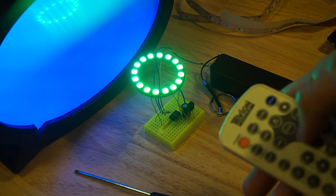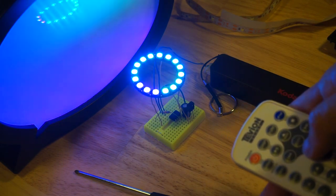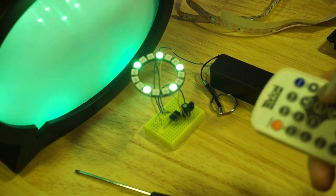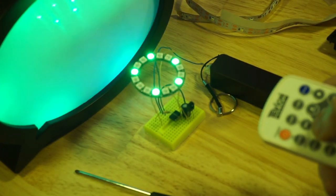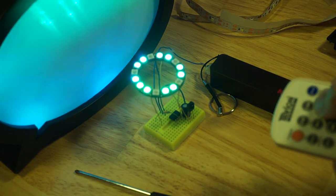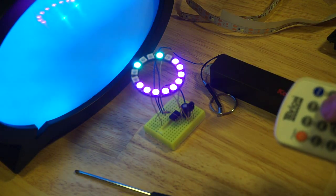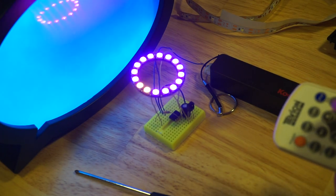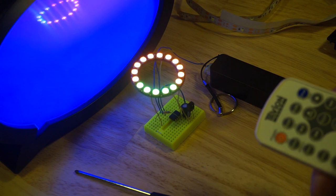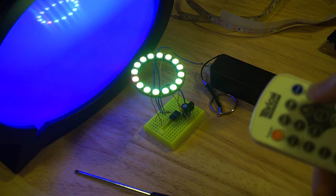So, the menu up and down changes the modes. So, the fast forward and rewind speeds things up and slows them down. And there are various other buttons that change certain aspects of the animations.